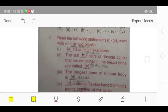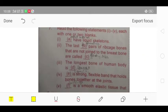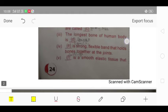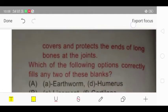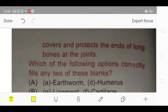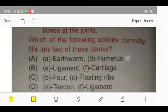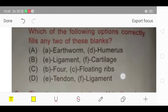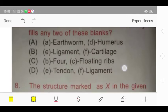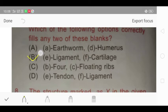Next is question number 7. Read the following statements 1 to 5. Here are statements which say that blank have liquid skeletons. The last blank pair of ribcage bones not joined as breastbone are called blank. Longest bone of a human body is blank. Blank is strongest flexible bands that hold bones together at the joints, and blank is a smooth elastic tissue that covers and protects the ends of long bones and joints. Which of the following options correctly fills any 2 of these blanks? The correct answer for question number 7 is option number B.